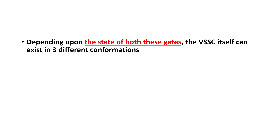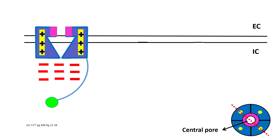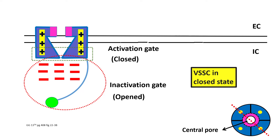The voltage-sensitive sodium channel itself can exist in three different conformations: the open state, the closed state, and the inactivated state. In the first conformation, the activation gate is closed and the inactivation gate is open. In such a situation, the voltage-sensitive sodium channel is said to be in the closed state.